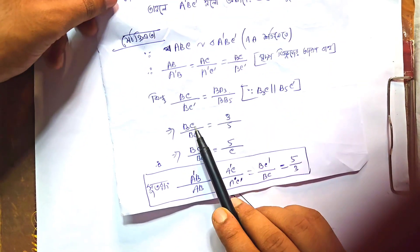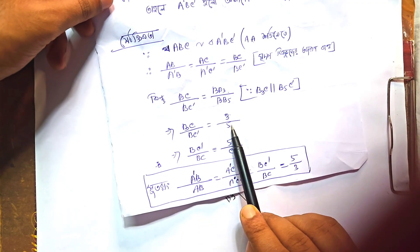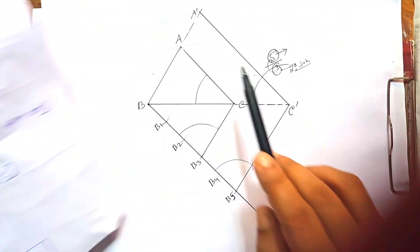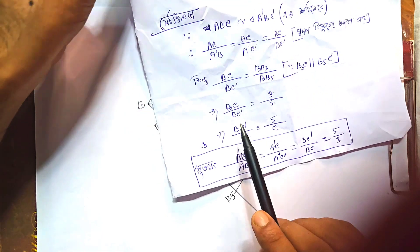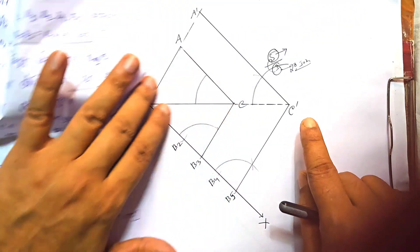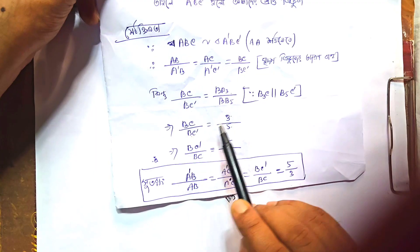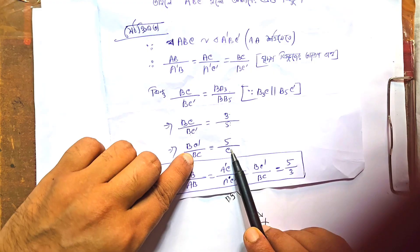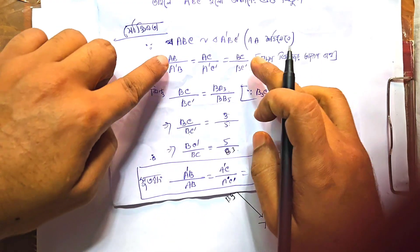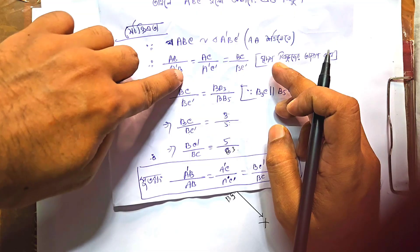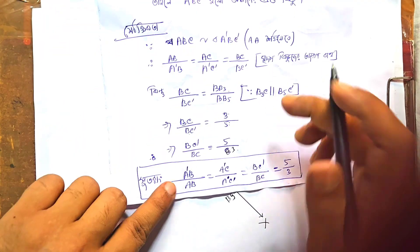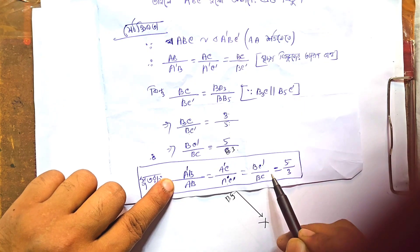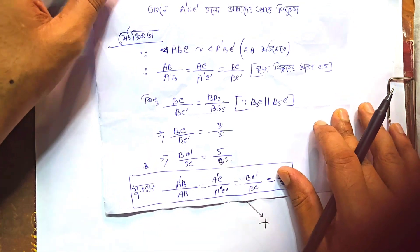So we get BC' by BC×3, and that was before we got BC' by BC'. So if you want to see it, that's BC minus by BC, 5 by 3. That means BC by BC, 5 by 3. Ultimately BC by BC.